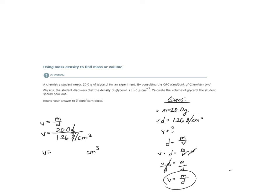When I place this into the calculator, the answer that I get rounded to three significant digits is 15.9. So this would be my answer. So if the student wants 20 grams of glycerol, the student needs 15.9 cubic centimeters or milliliters of glycerol.